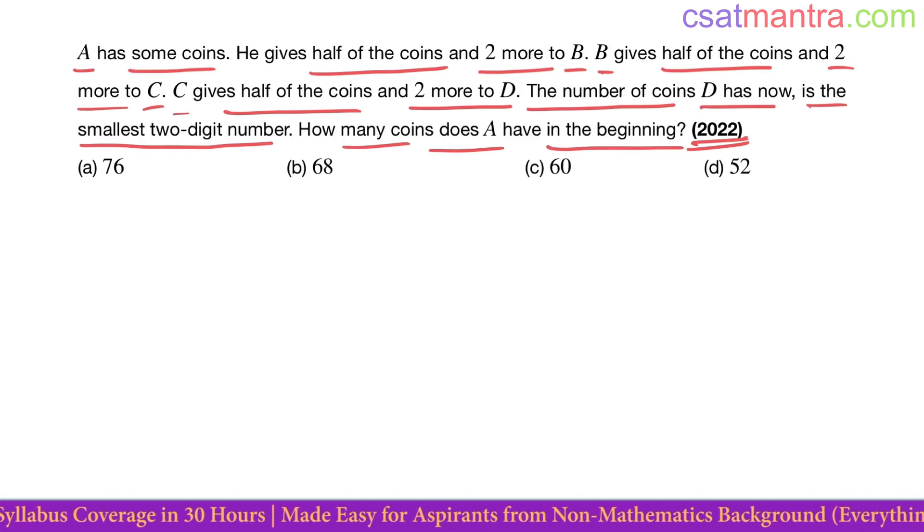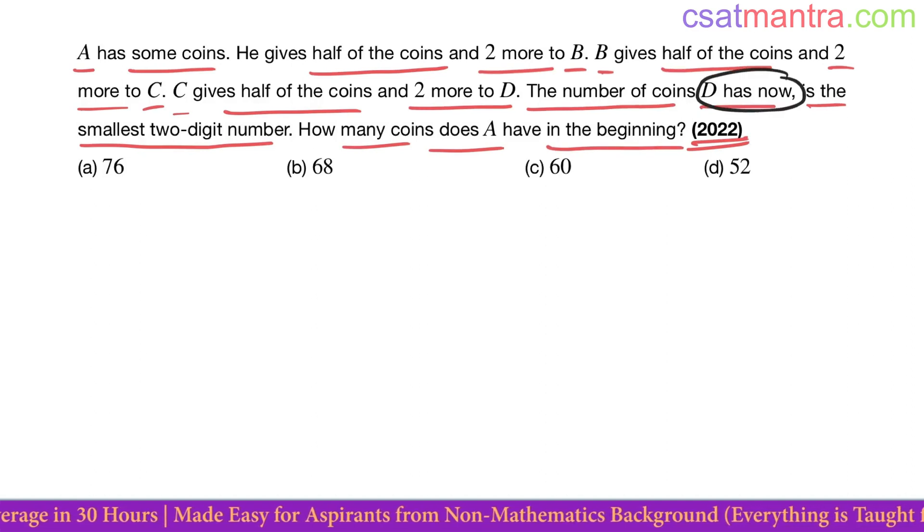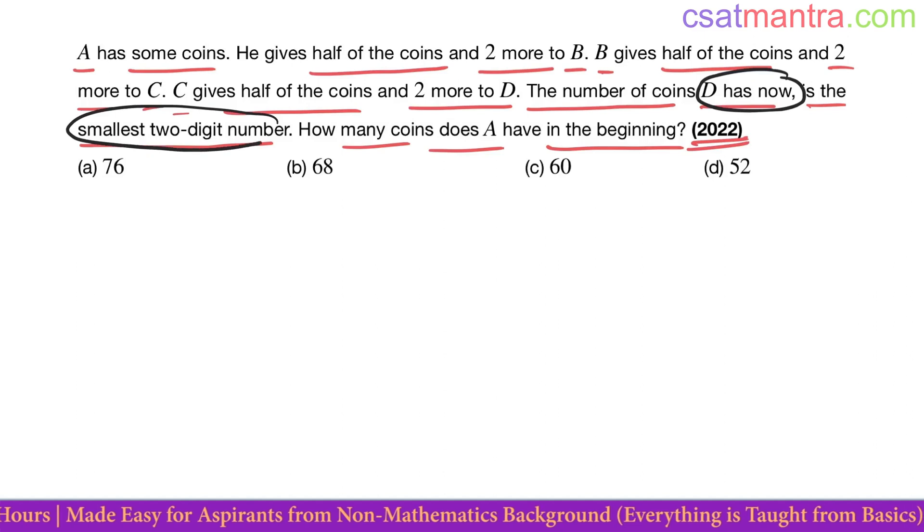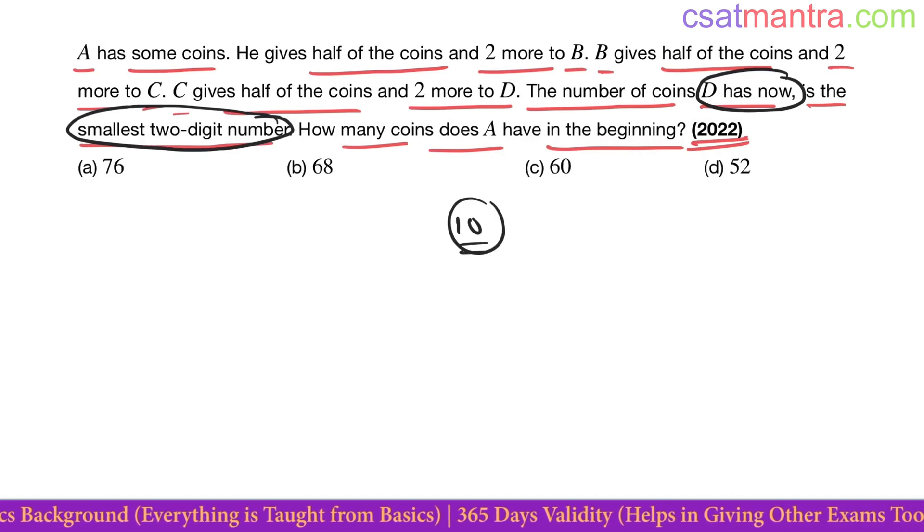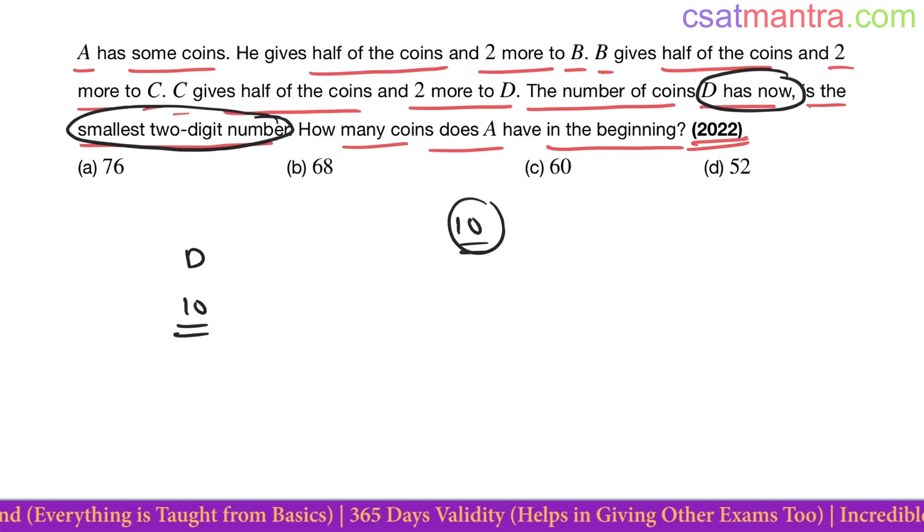The number of coins D has now is the smallest two-digit number. What is the smallest two-digit number? 10. 9 is single digit. 10 is the two-digit number, smallest two-digit number. So D has 10 coins.